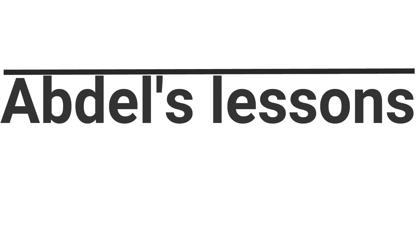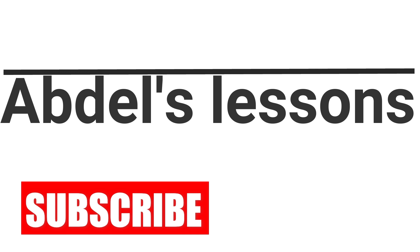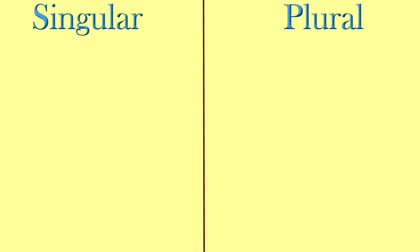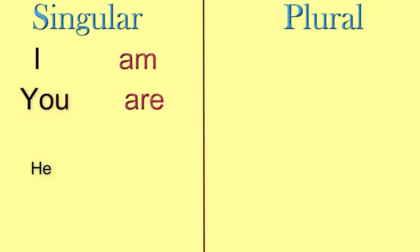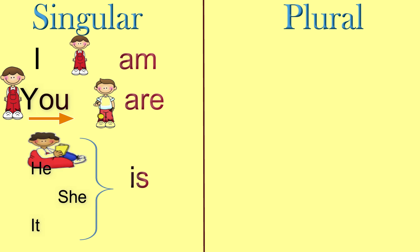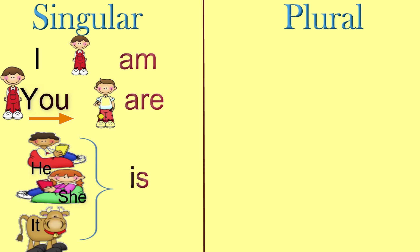Hello everyone and welcome to beginners lessons: pronouns and the verb to be, singular and plural. The singular forms: I am, you are, he is, she is, it is. I am refers to one person. You are addresses someone. He is for a boy, she is for a girl, and it is for animals or objects.